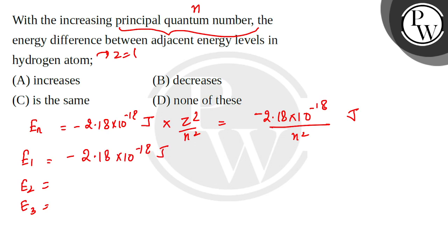If you divide by 2 squared, E2 equals minus 2.18 into 10 to the power minus 18 divided by 4 joule. And if you take 3 squared, E3 equals minus 2.18 into 10 to the power minus 18 divided by 9 joule.